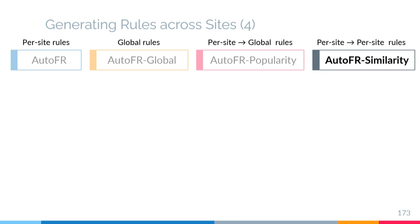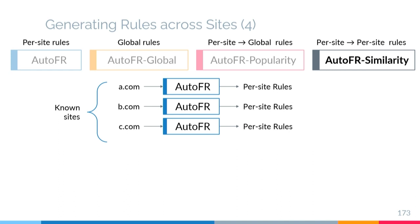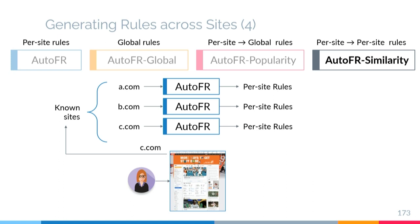The next approach, we call AutoFR Similarity. Once again we generate per-site rules for a set of known sites. When a user visits a site that matches one within the known set, we simply apply the rules we already have.